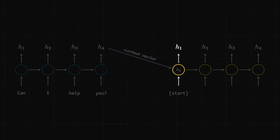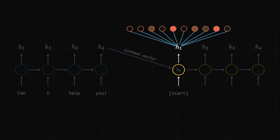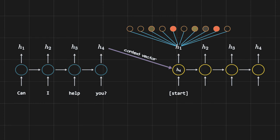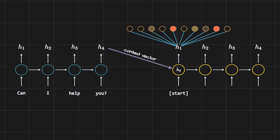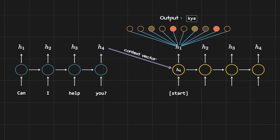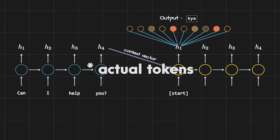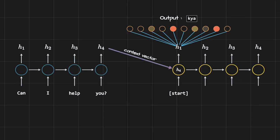To know which word was predicted by the decoder, we feed the hidden state to a feedforward network with as many neurons as the Hindi vocabulary has. For example, if our Hindi vocabulary has only 10 words, hidden state h1 is passed through this feedforward network with 10 neurons, and a softmax determines which word is predicted. The first token the decoder should predict is 'kya.' During training we have the actual tokens, so we can compare predictions and calculate the loss for backpropagation.